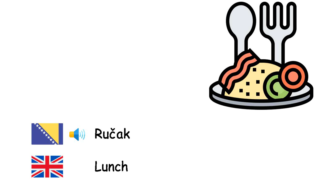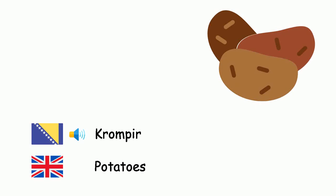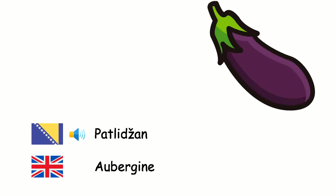Ručak. Cvekla. Krompir. Patlidžan. — Lunch. Beet. Potatoes. Aubergine.